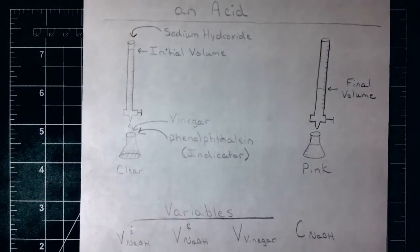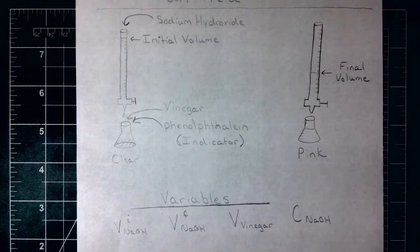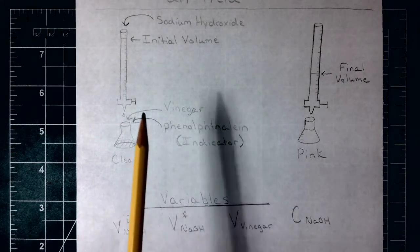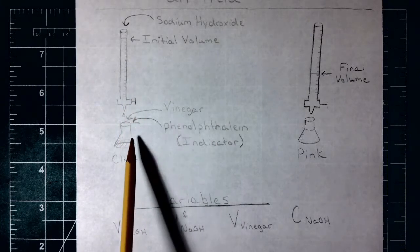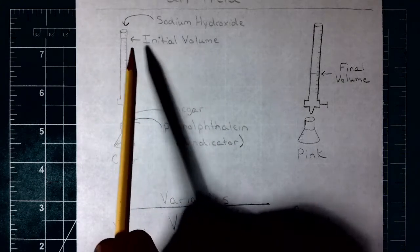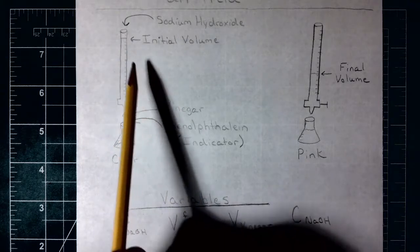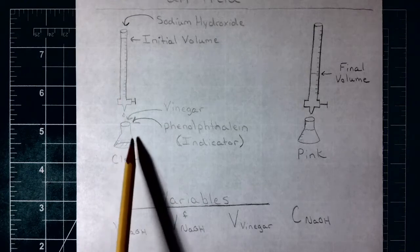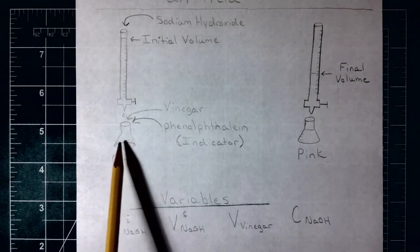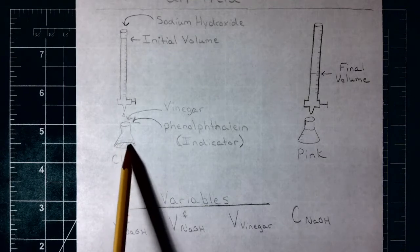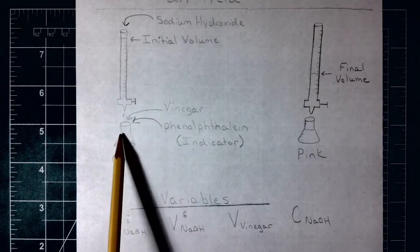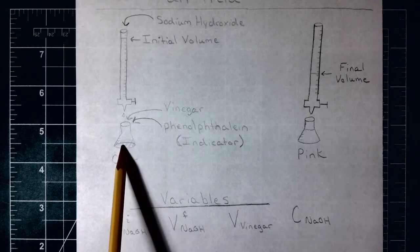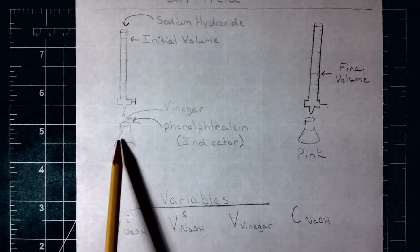This is going to be a titration, which is a volumetric technique, meaning that we are going to be making measurements of volume in order to figure out how many moles of our known titrant we're going to add to a certain volume of our unknown. That unknown is going to be vinegar, which contains acetic acid — it's an acetic acid and water solution.